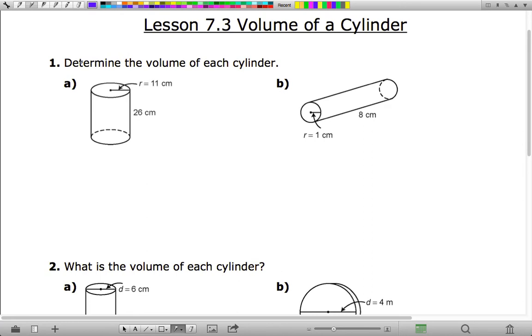First question here, we want to determine the volume of each cylinder. In order to do that, you can do the volume is the area of the base times the height. And so this is the height, and the area of the base is pi r squared. So here's r. So you're doing pi times 11 squared and multiplying by 26.